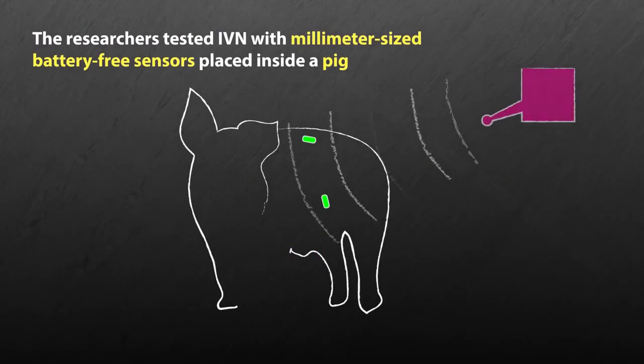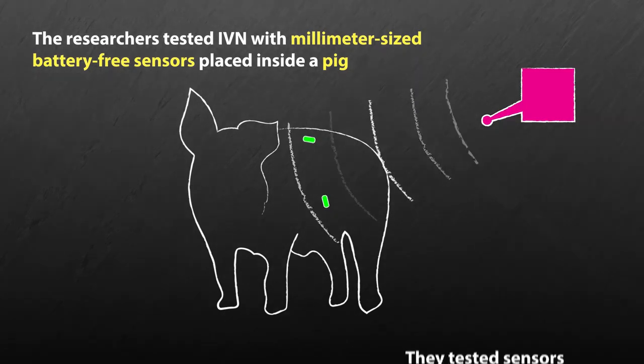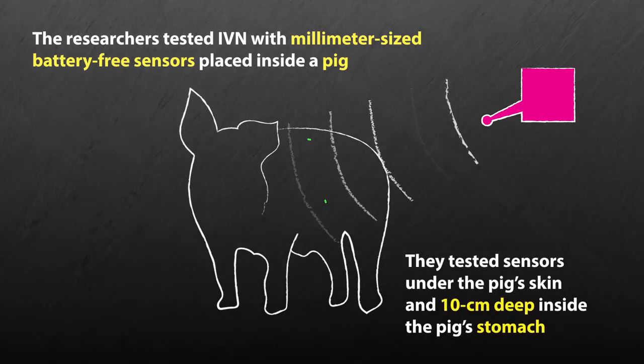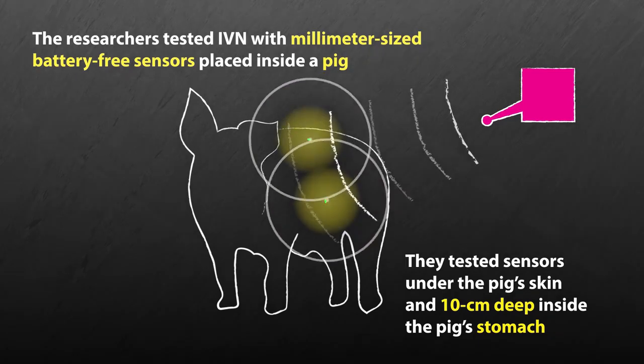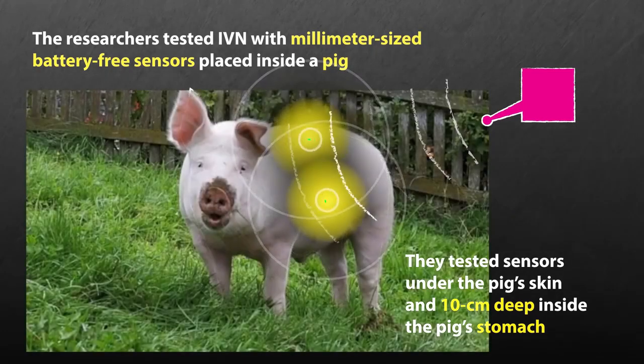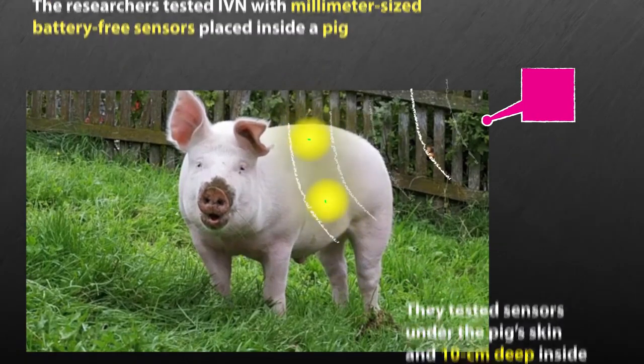The researchers have tested IVN with millimeter-sized, battery-free sensors placed inside a pig. They have shown how to power up and communicate with battery-free tags placed under the pig's skin and 10 centimeters deep inside the pig's stomach.